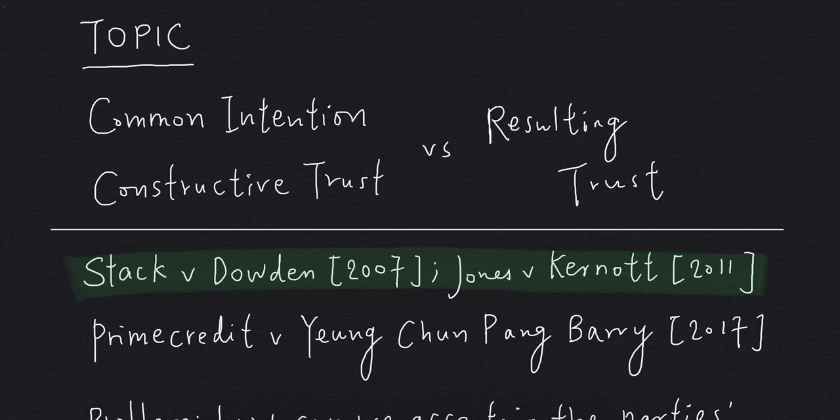By now, I hope you have a better understanding of both common intention constructive trust and resulting trust. In this video, we're going to focus on the interaction between these two trusts. The important cases are Stack v Dowden and Jones v Kernott. There is also the recent Hong Kong case of Prime Credit. So let's start.